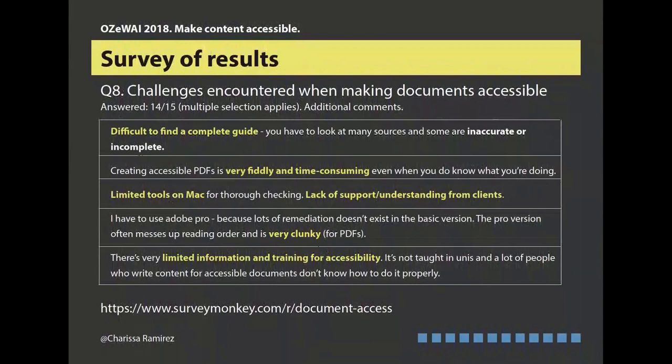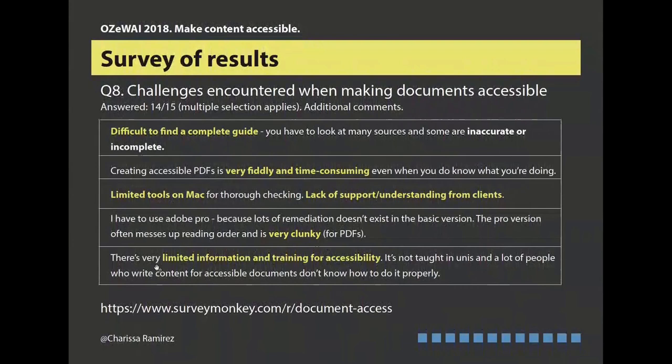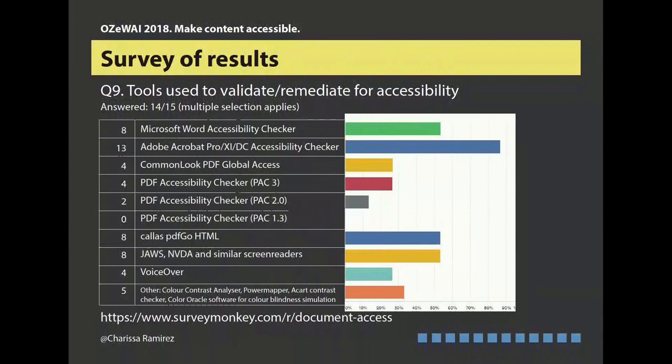So the tools: most respondents — 13 of the 15 — use the checker, and other tools are available. We're in Australia, we're doing it on the WCAG 2.0 to 2.1 Level AA as a standard for accessibility conformance — so 14 of the 15 answered that — and two also do PDF/UA, universal accessibility standard.